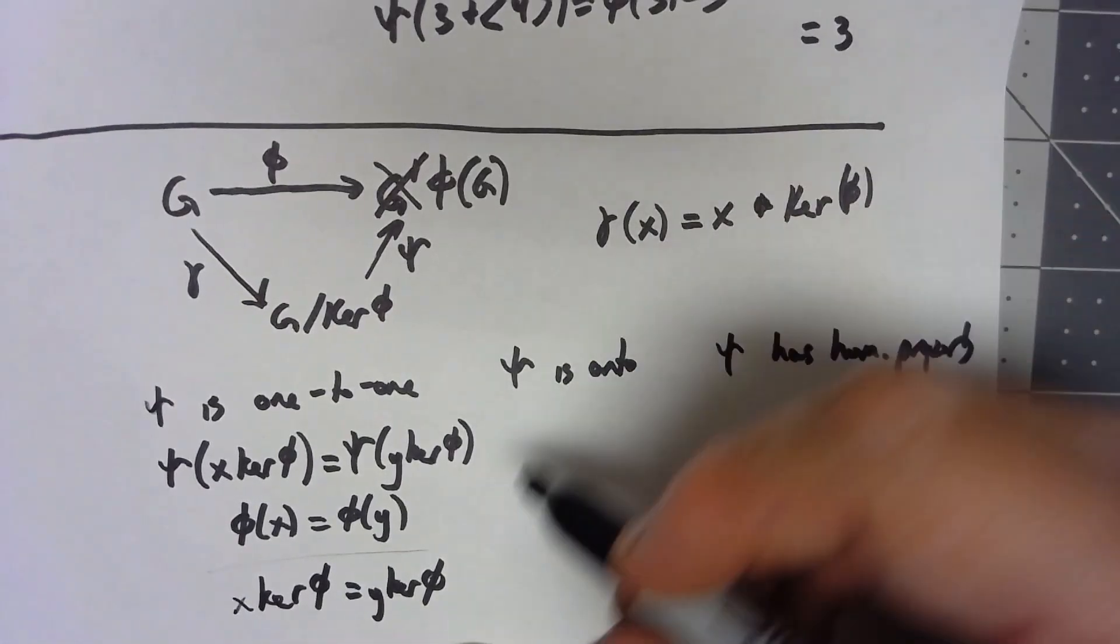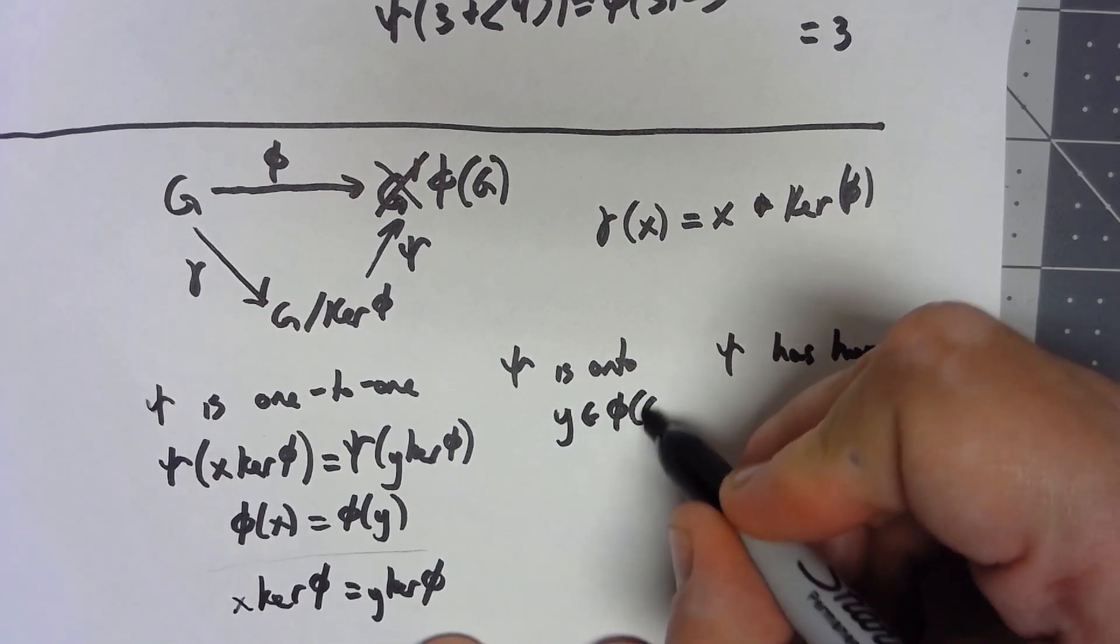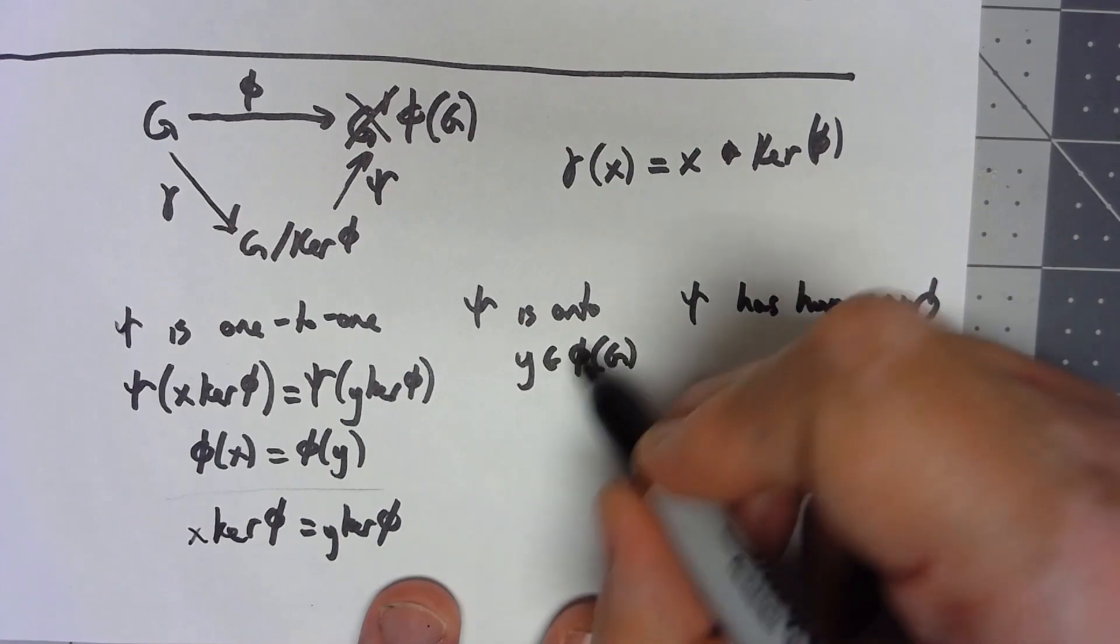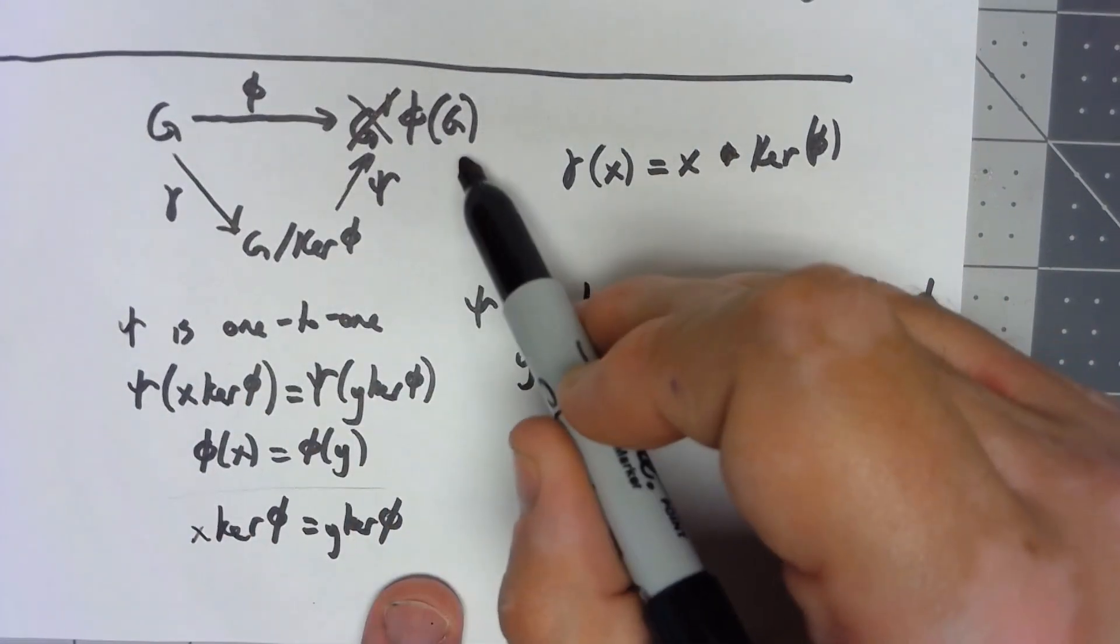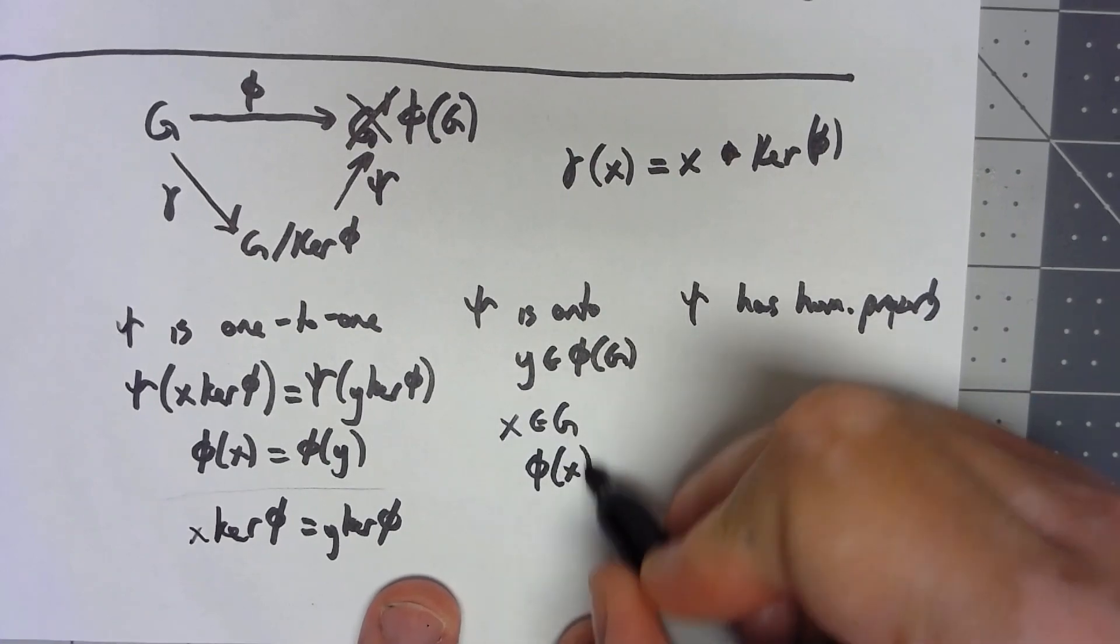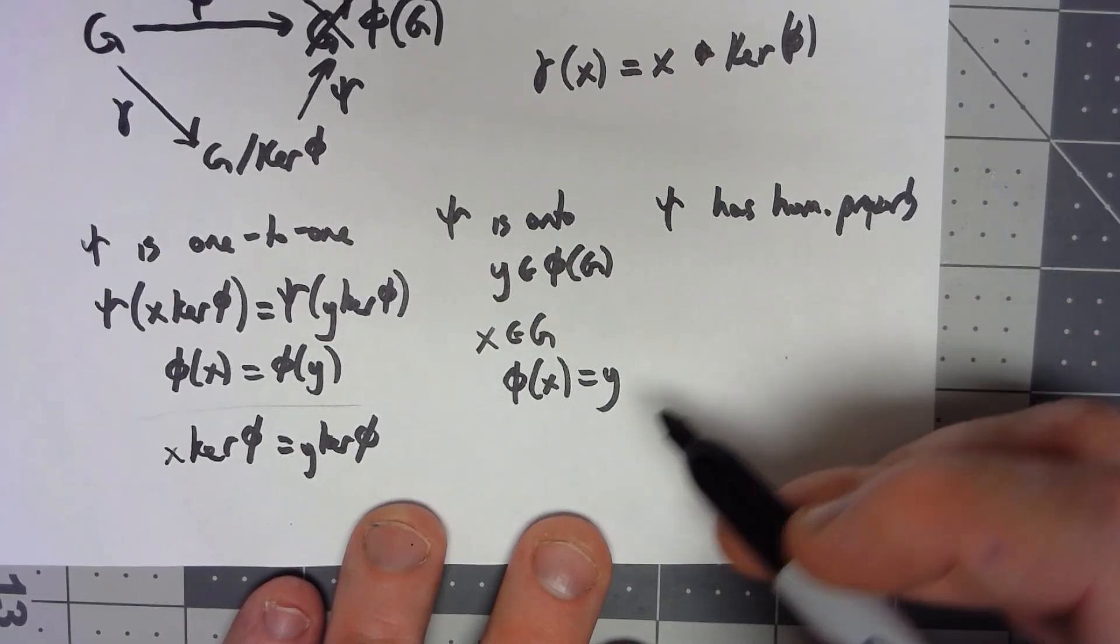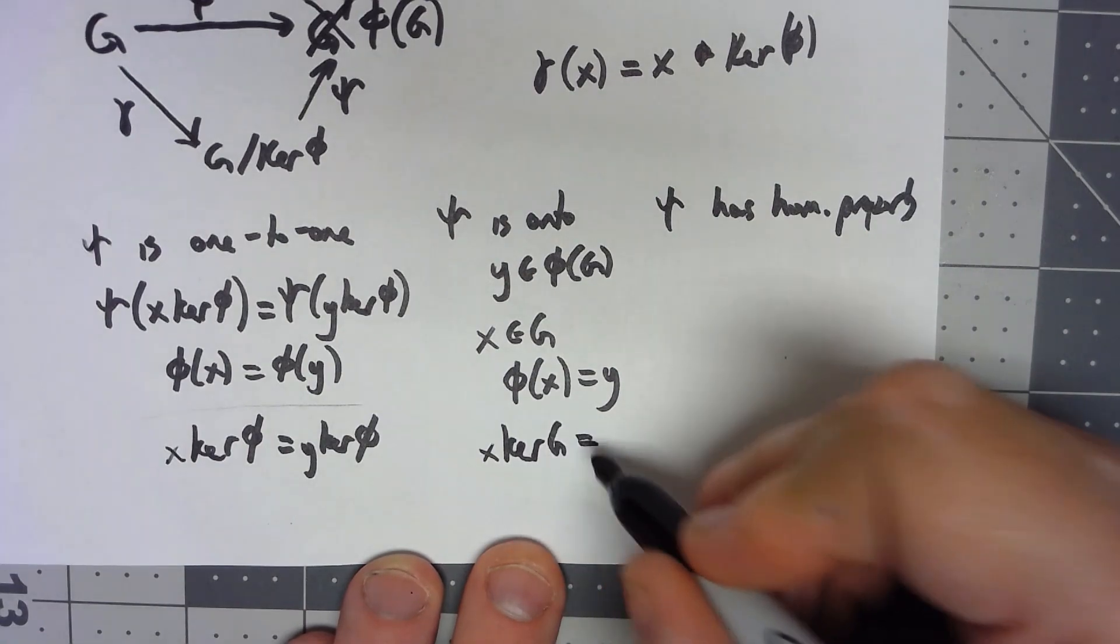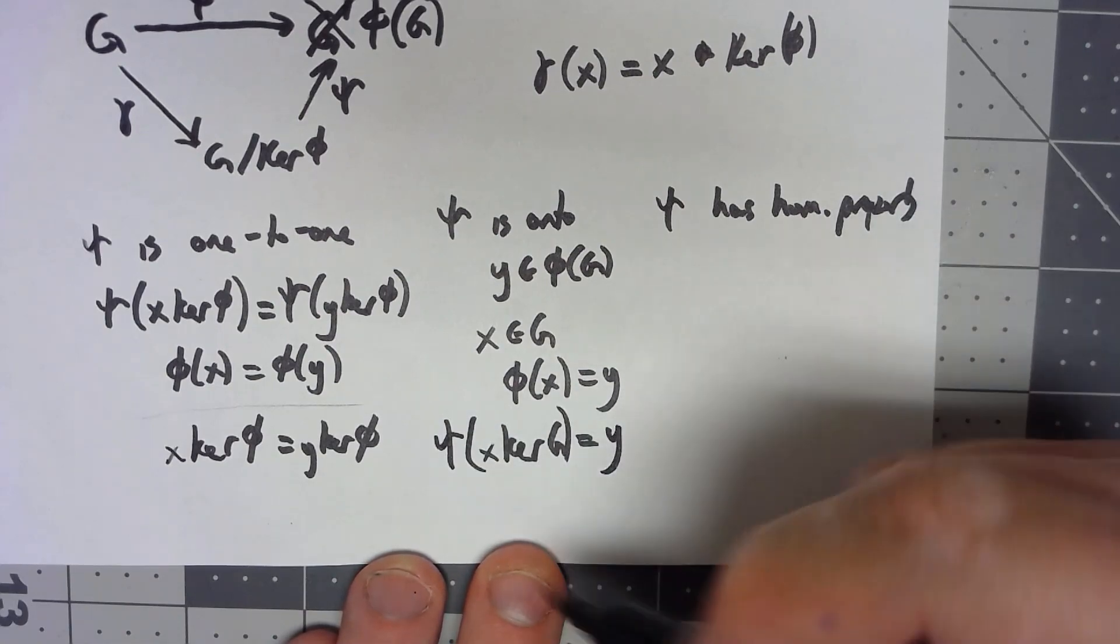To show this is onto, so let's suppose we have some y in phi of G. So that means that since we know that phi is a homomorphism and it's certainly onto its image, that means there is an x in G with phi of x equal to y. But if phi of x equals y, then chi of x kernel of G has to give us y, making it onto.